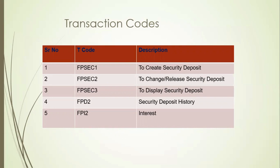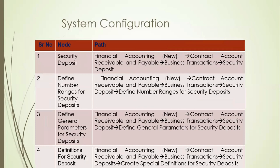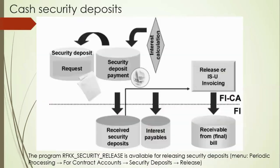So in your systems, anytime you can create a business partner, create a contract account, and collect the security deposit. It will post directly to a GL. Then you can go to FP0 or FPL9 to check, or you can go to FPD2 to check how much security deposit has happened. We have a program RFKK Security Release to release the security deposit. The periodic processing for the contract account is for this.